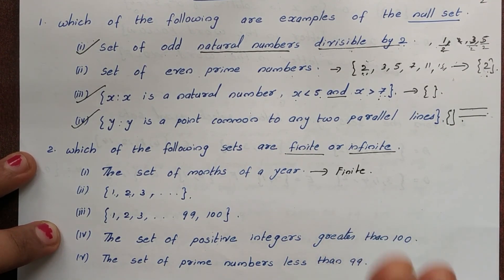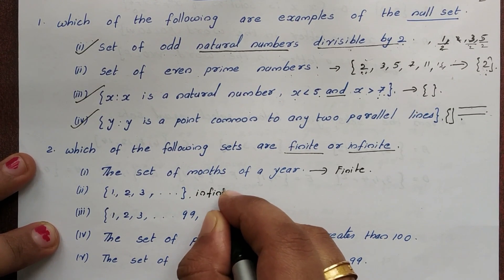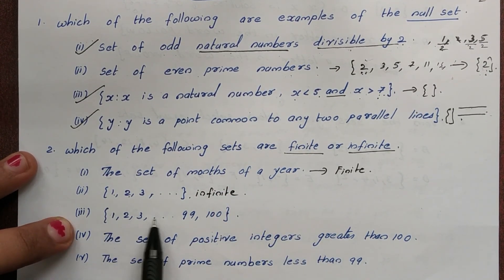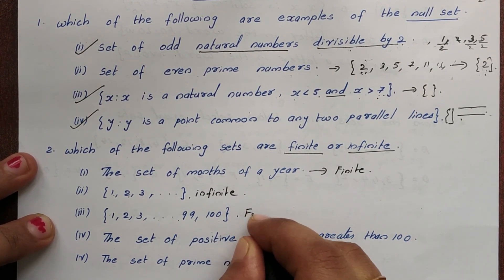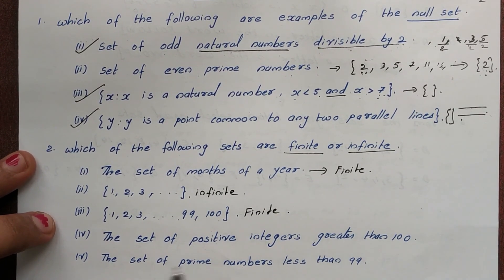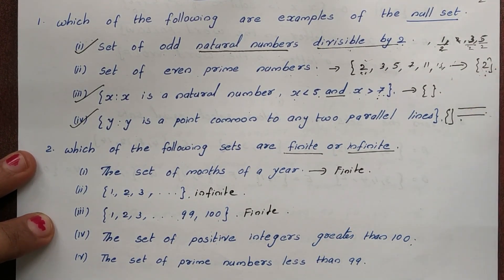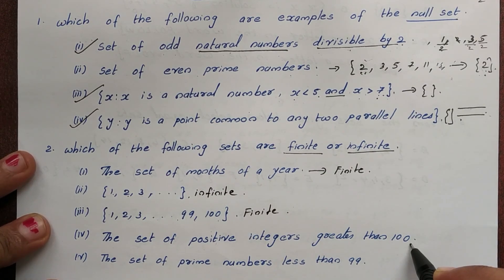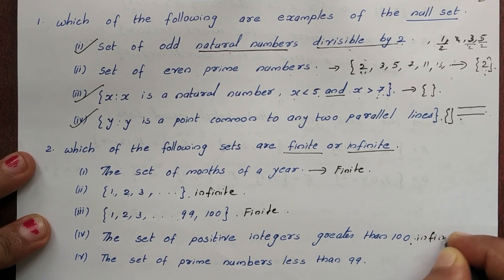What is an infinite set? For example, 1, 2, 3, ..., 99, 100 and continuing. The set of positive integers greater than 100 goes on without end, so we can see this is an infinite set.